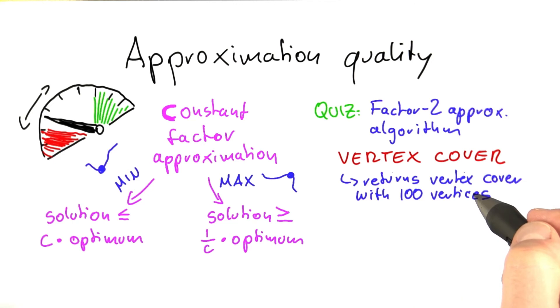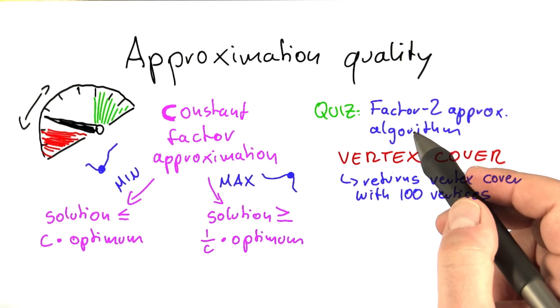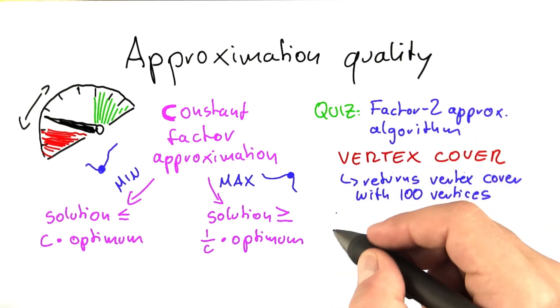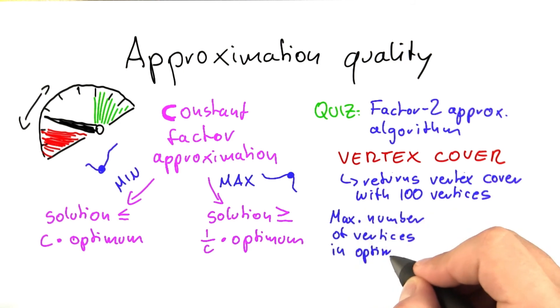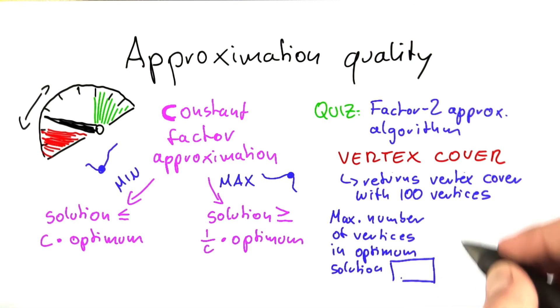And of course, this is a correct answer. So it is indeed a vertex cover. We just don't know if it's the smallest possible vertex cover because we're using an approximation algorithm. What I would like you to tell me now is two things. First of all, what is the maximum number of vertices in an optimum solution? And please enter your answer here. And what is the minimum number of vertices in an optimum solution? And please enter this number here in this box.